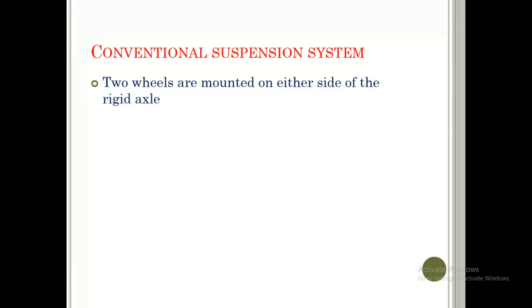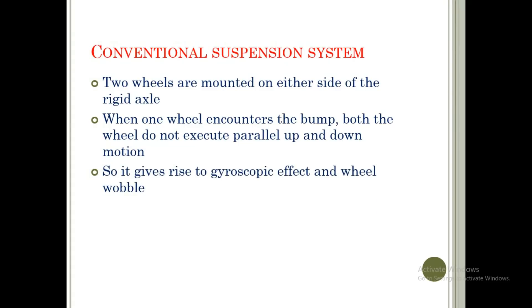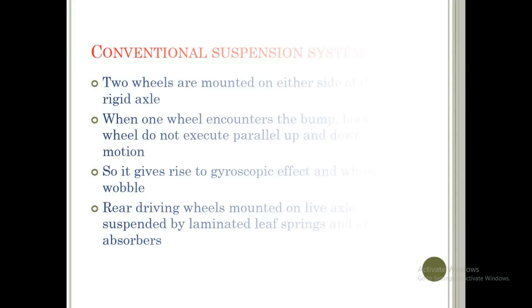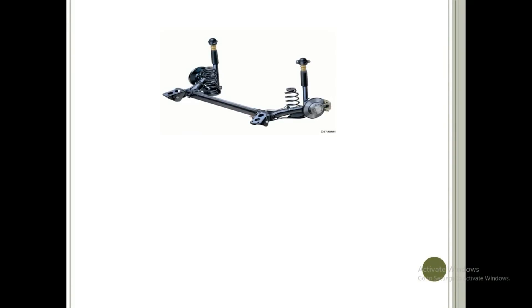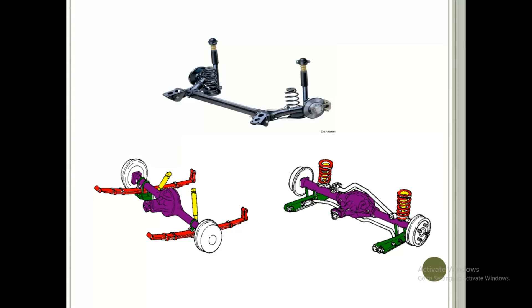The conventional suspension system is where two wheels are mounted on either side of a rigid axle. When one wheel encounters a bump, both wheels do not execute a parallel up and down motion, giving rise to the gyroscopic effect and wheel wobble. Rear driving wheels are mounted on a live axle suspended by laminated leaf springs and shock absorbers. In this image we can see the springs, shock absorbers at the rear end, and the leaf spring — all part of the conventional suspension system.